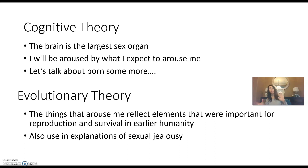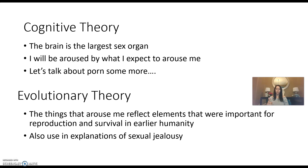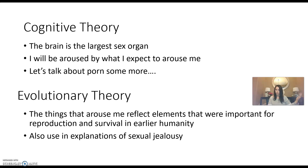That would be the evolutionary explanation for why, for cisgender heterosexual individuals, women with a curvy hourglass body shape are found attractive. Similarly among men — for cisgender heterosexual females, men who are thinner, muscular, and taller are seen as attractive because they could help fight off predators, drag an antelope back to camp, and take care of the family.